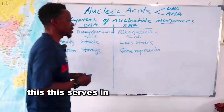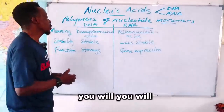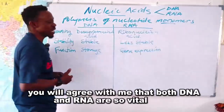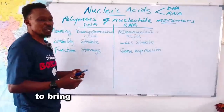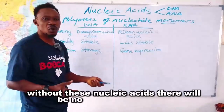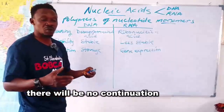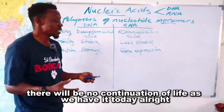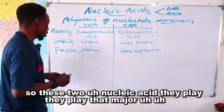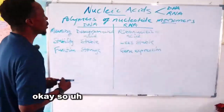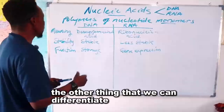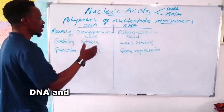Both DNA and RNA are vital to life. They are used to bring about the continuity of life. Without these nucleic acids there would be no perpetuation or continuation of life as we have it today. These two nucleic acids play that major role.